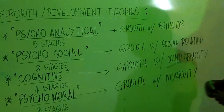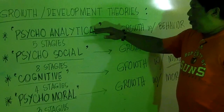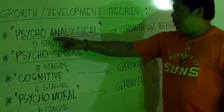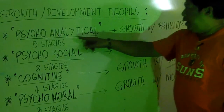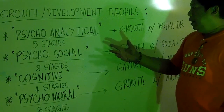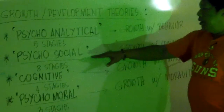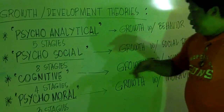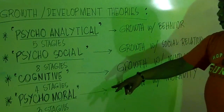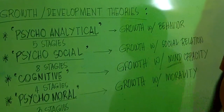These are the four major theories for growth and development. There are people who contributed these theories: for psychoanalytical, it was introduced by Sigmund Freud; psychosocial is by Eric Erikson; cognitive is by Jean Piaget; and psychomoral is by Kohlberg. So this is all about growth and development of a child discussion.